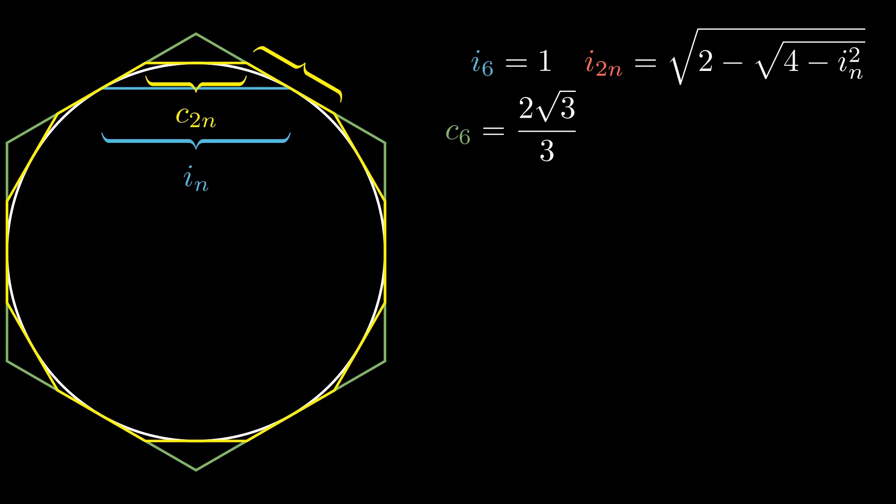This line is a side of the circumscribed 2n-gon, so if we halve it we get c_2n over 2. This line is a side of the circumscribed n-gon, so if we halve it we get c_n over 2.